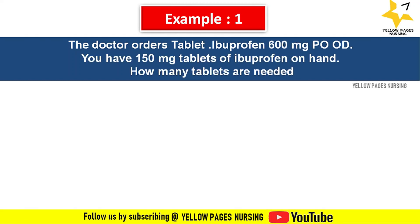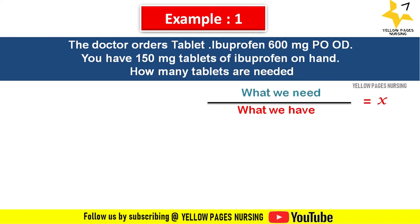You have 150 milligram tablets on hand. How many tablets are needed? The formula to calculate tablet dosage is: what we need divided by what we have, which gives the exact dosage of the tablets.